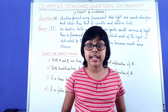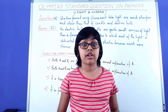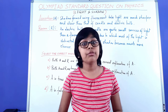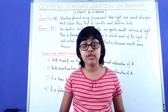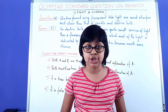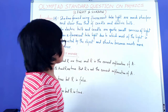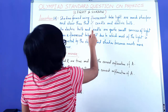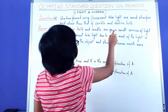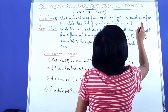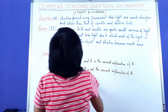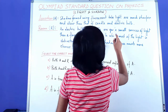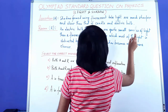Now that we've understood how to analyze the correct option quickly, we can move on to our question. Assertion: Shadows formed using fluorescent tube lights are much sharper and clearer than those of candles and electric bulbs.